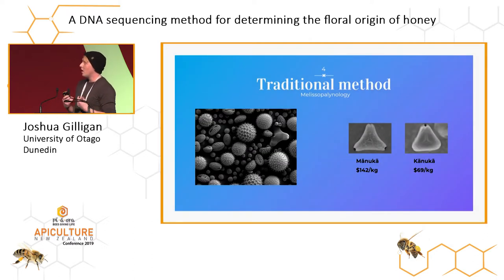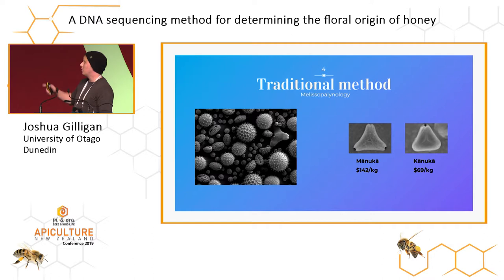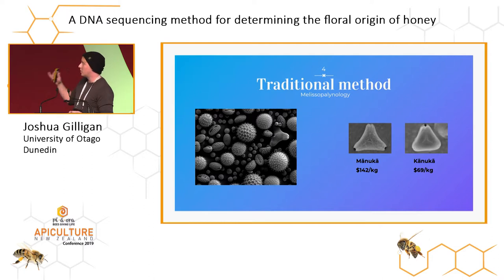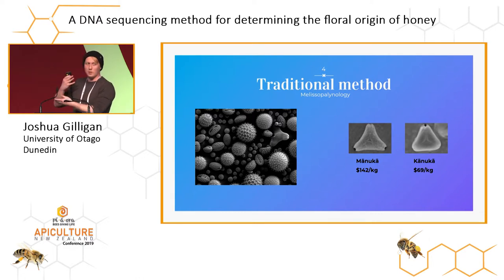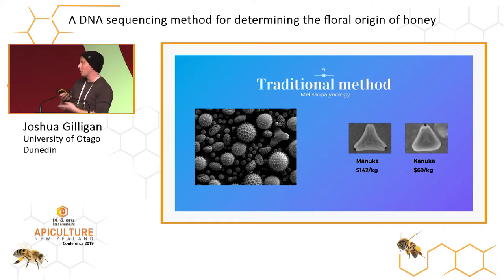Here's some pollen under an electron microscope to give a bit more resolution on it. Here are a couple of pollens that are often commonly misidentified as each other, and the associated cost if they were a monofloral variety. From a normal microscope it would be really hard for your average person to do this, and that's going to increase the cost of trying to do this.